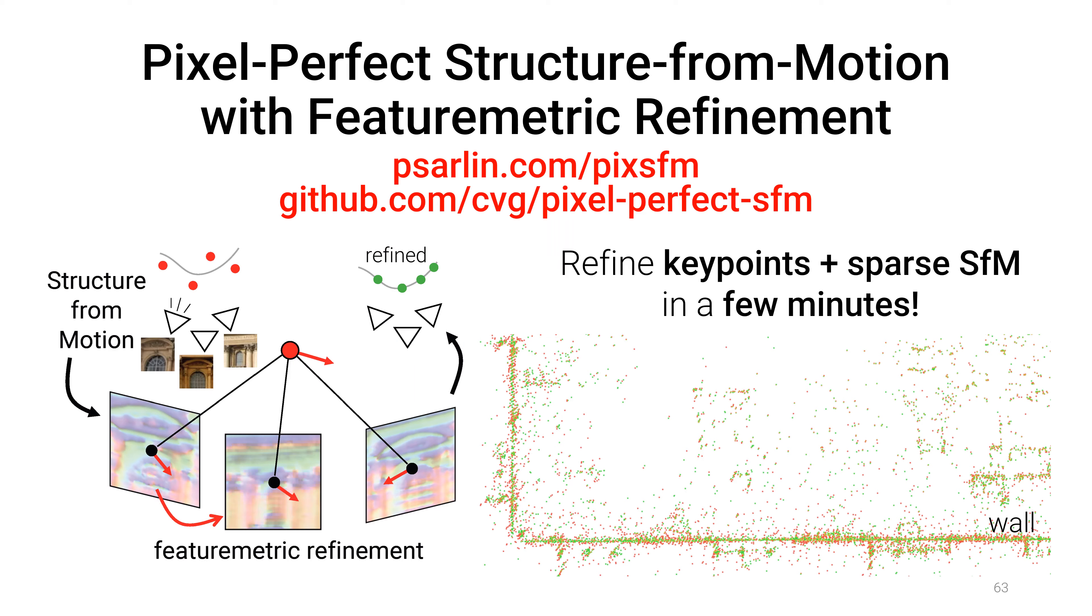We presented Pixel Perfect Structure from Motion, a two-step refinement strategy for keypoints and sparse SFM by aligning deep feature maps. Visit our page for more visualizations, the paper and additional information. Try it yourself with our open source code and make your sparse reconstructions sub-pixel accurate in little time.